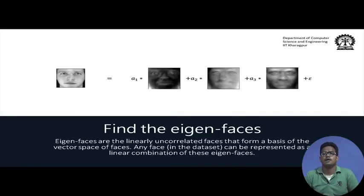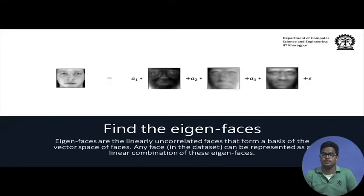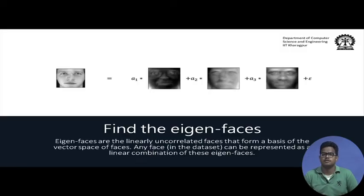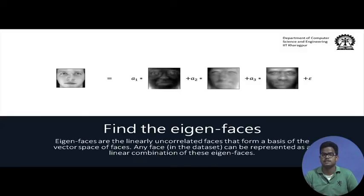Next we find the eigenfaces, which are the principal components we discussed — the eigenvectors of the covariance matrix of the face dataset. These eigenfaces are a set of vectors that encode a lot of information about faces: a face can be represented as a linear combination of these eigenfaces. A 64×64 face gives 4096 variables per pixel. Instead of using all 4096 correlated variables, we represent faces in terms of principal components, using just 150 of them — a huge dimensionality reduction.